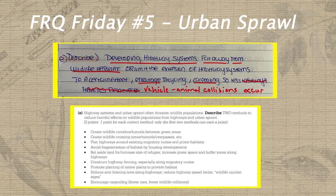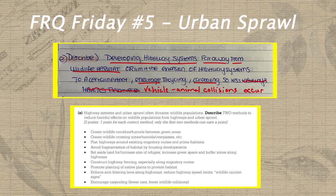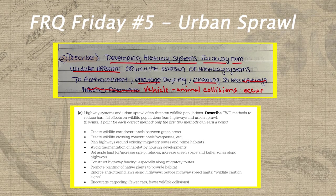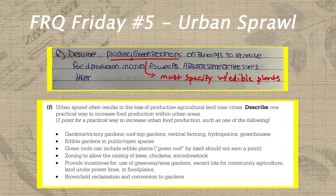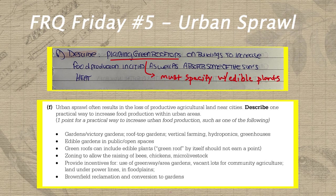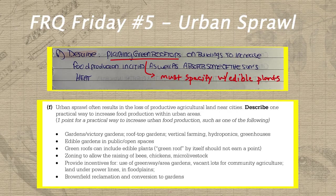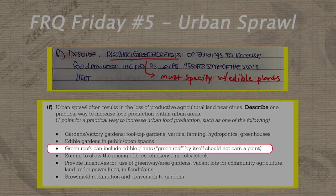On the second point in part E, Lean has a great start, but needs to link increased carpooling to fewer cars being on the road and therefore fewer collisions with wildlife. Instead, she connected it to less highways needing to be built, which isn't really what the prompt is asking. And in part F, Lean once again just narrowly misses a point by stating that cities can plant green rooftops to increase food production, but without specifying that those green rooftops would have edible plants — a crucial detail that's explicitly spelled out in the rubric.